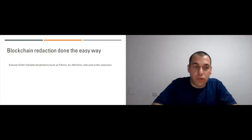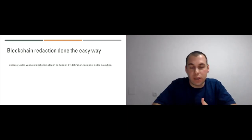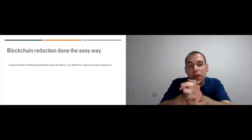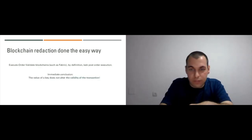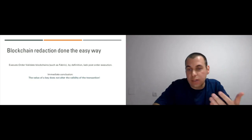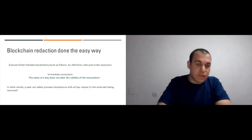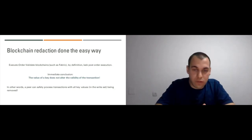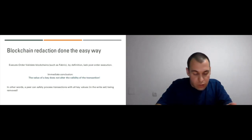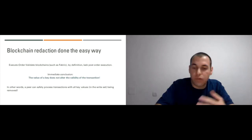The simple technique applies only to execute-order-validate blockchains like Fabric. By definition, these blockchains lack post-order execution — meaning transactions are executed before being put into a block. An immediate conclusion is that the value of a key does not affect the validity of a transaction. In other words, a peer can safely process transactions with all key values removed.